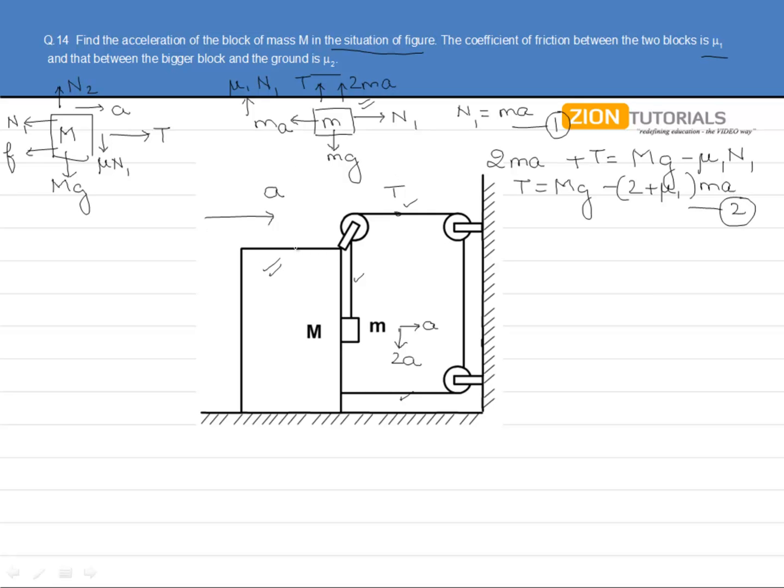If we come to the bigger block, we can say that Mg plus μ1 N1 equals N2 minus T, giving us N2 equals tension plus μ1 mA plus Mg.